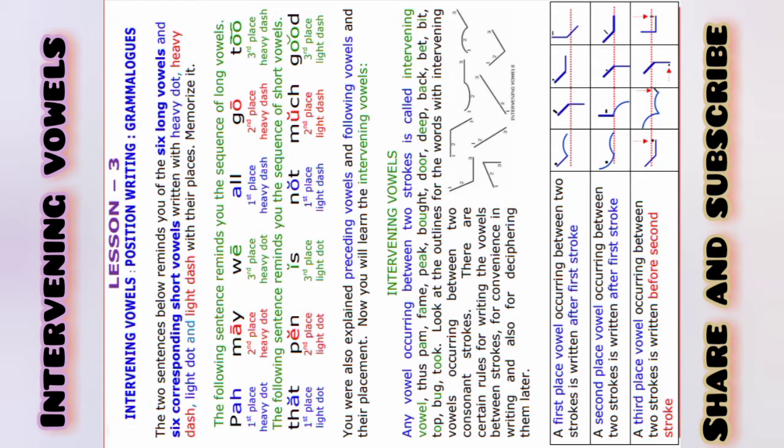The following sentence reminds you of the sequence of long vowels: pa, may, be, all, go, to—first place, second, third, which is dark dot, and all go to first, second, third place, which is dark dash.